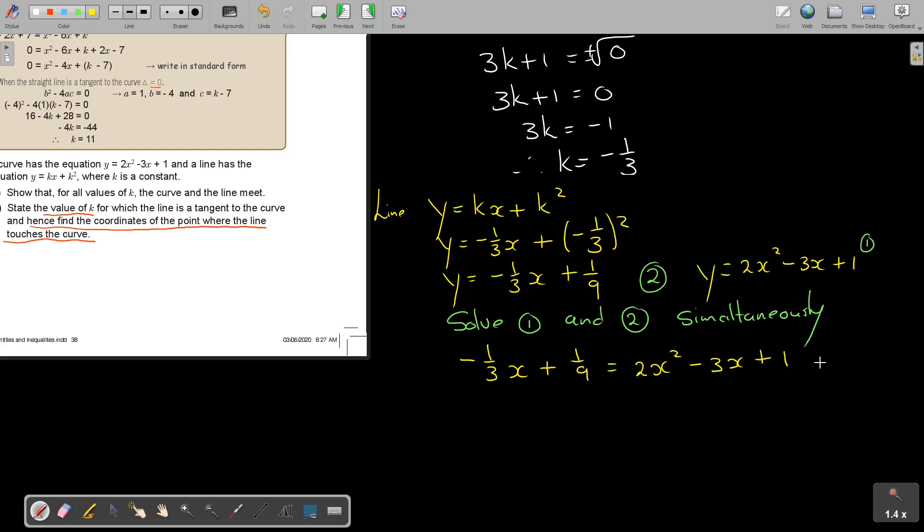So, it's negative 1 third X plus 1 over 9 is equal to 2X squared minus 3X plus 1. Now, I don't want to work with fractions. So, the best way is to get rid of the fractions. So, to get rid of the fractions, I'm just putting this almost over 1. And what is my LCM? 9. So, it's like I times with 3, I times with 9, I times with 9 and I times with 9.